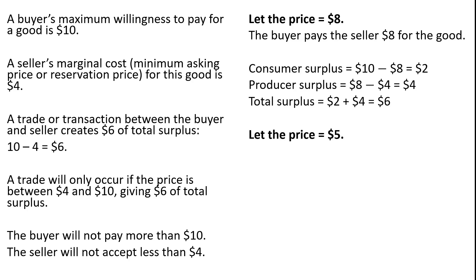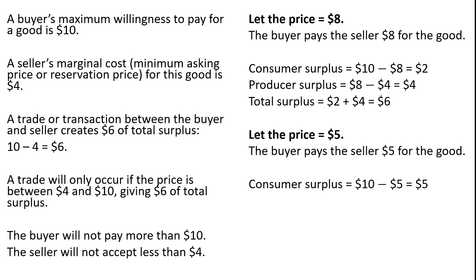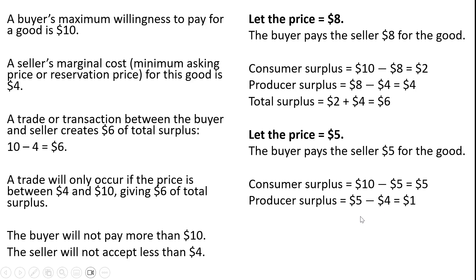Let's try a different price — a price of $5. The consumer pays the seller $5 for the good. Consumer surplus is the difference between the maximum willingness to pay of $10 and the price. Producer surplus is the difference between the price the seller receives and the seller's marginal cost. Once again, the total surplus is $6.